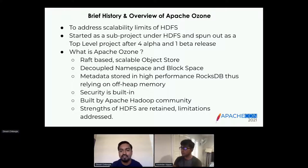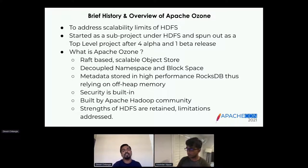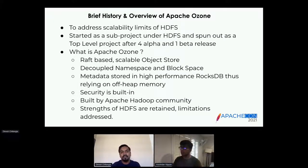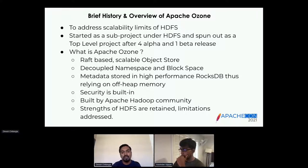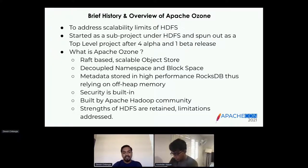Ozone actually started as a subproject under the Hadoop trunk. Fast forward four alpha releases and one beta release — last year, Ozone moved as a separate top-level project by itself, and that's where it's called Apache Ozone. It's a Raft-based scalable object store. The key difference from NameNode is that it has a decoupled namespace and block space. Metadata is stored in high-performance RocksDB instances, with a heavy reliance on off-heap memory. Security is built in by default, and the strengths of HDFS are retained while addressing its limitations.